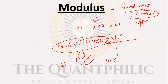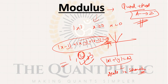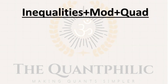There are also questions like |x| + |y| = n asking for the number of solutions. I have dealt with these in my shortcuts video — I will attach the link in the comment section. Inequalities, modulus, and quadratic together — you can expect a lot of questions from these.